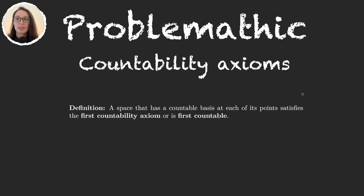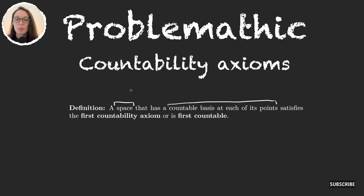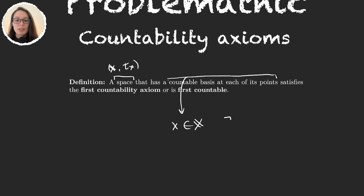The countability axioms are basically definitions for particular spaces. In the case where our topological space has a countable basis at each of its points, we say that that space is first countable. We're working with a topological space — let's call it (X, τ). For the space to have a countable basis at each of its points means that whenever we take an element in the space, there exists a countable collection B of subsets of the space for which...